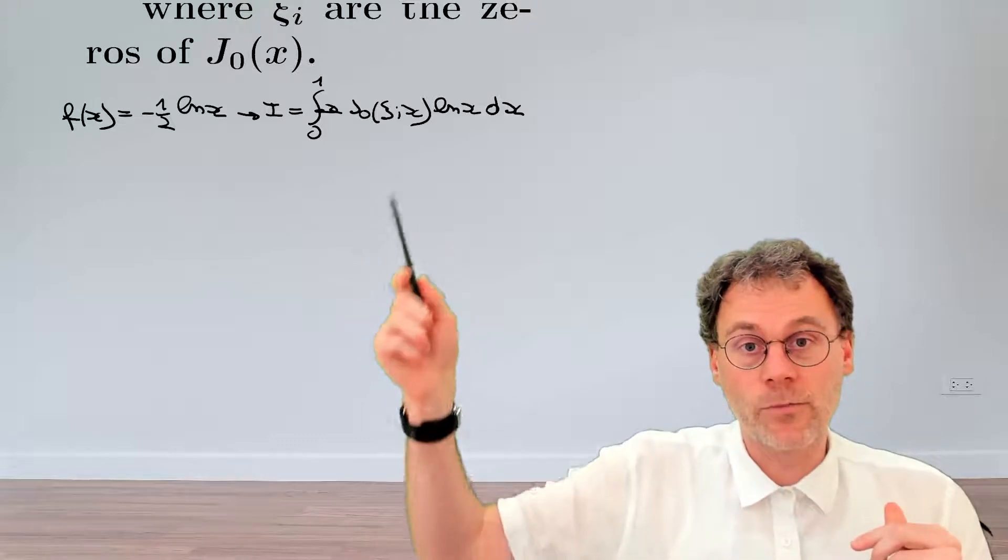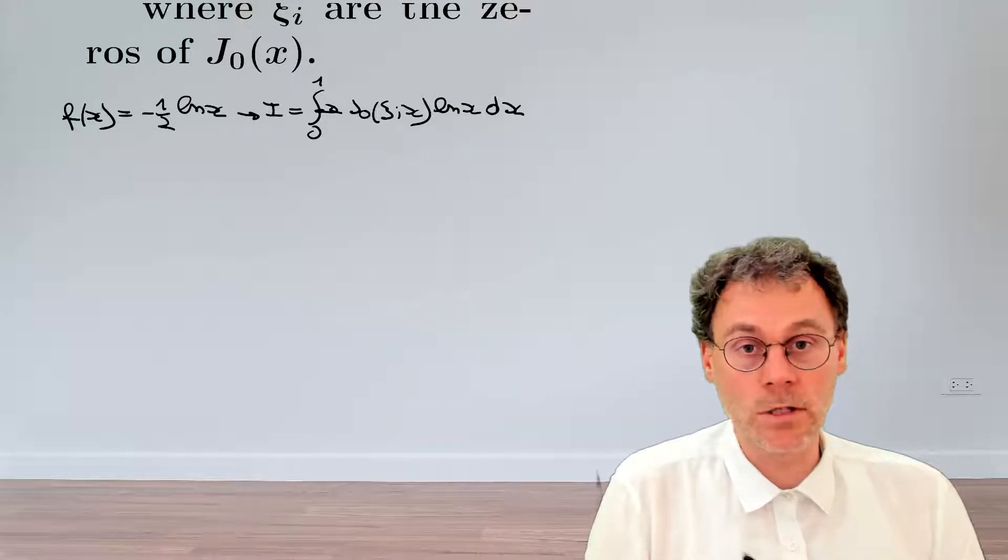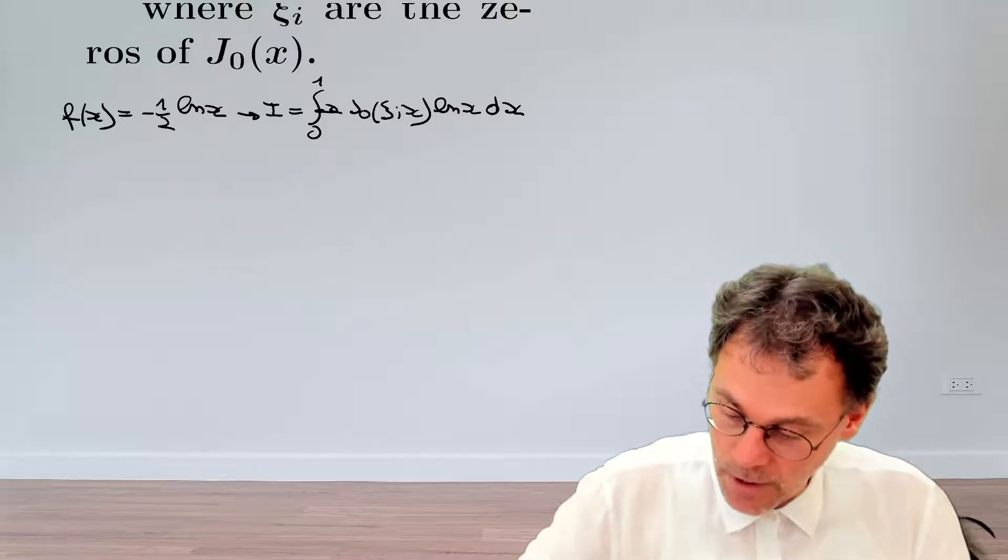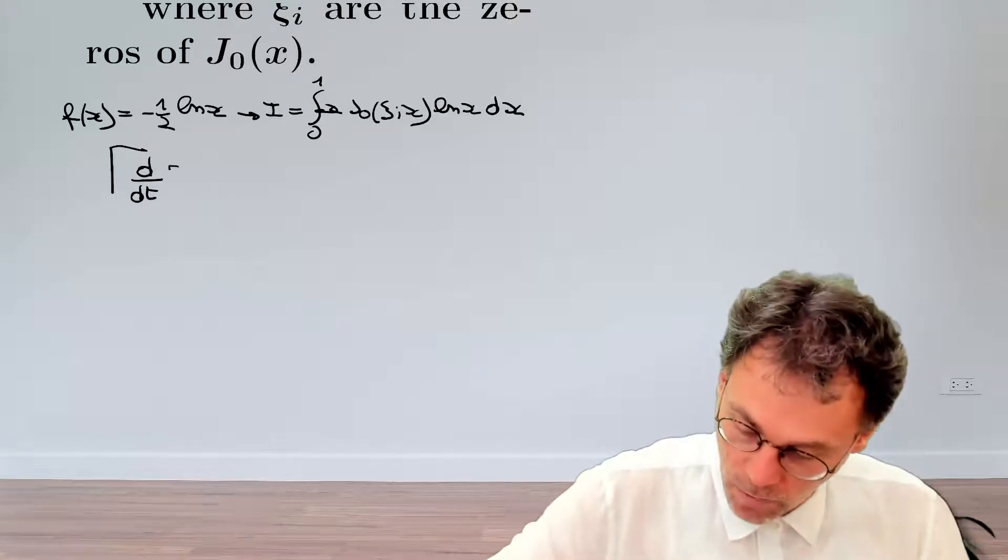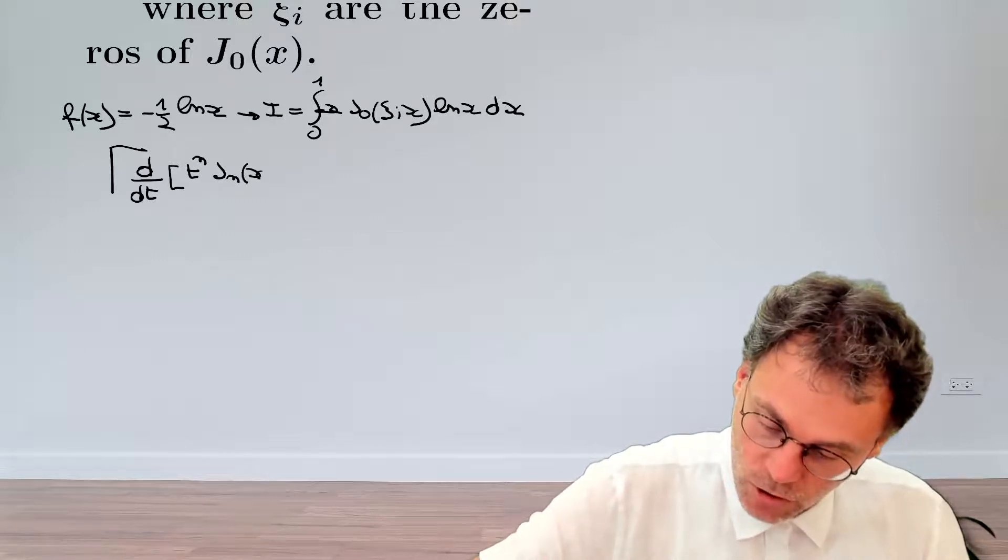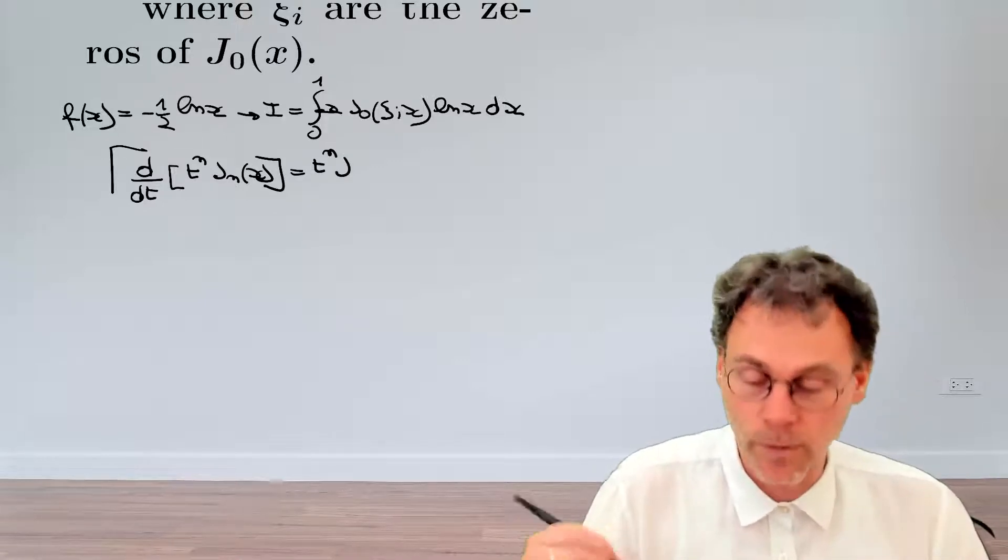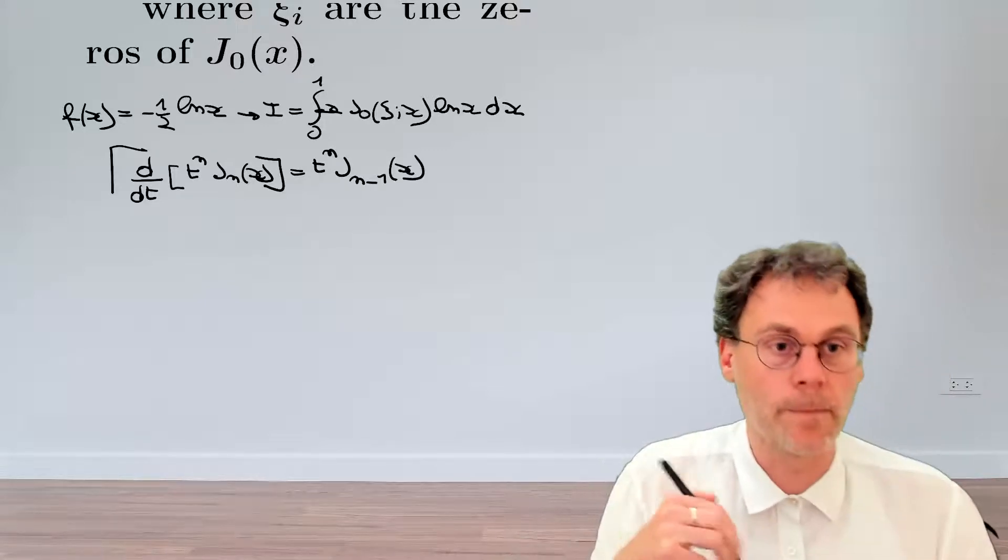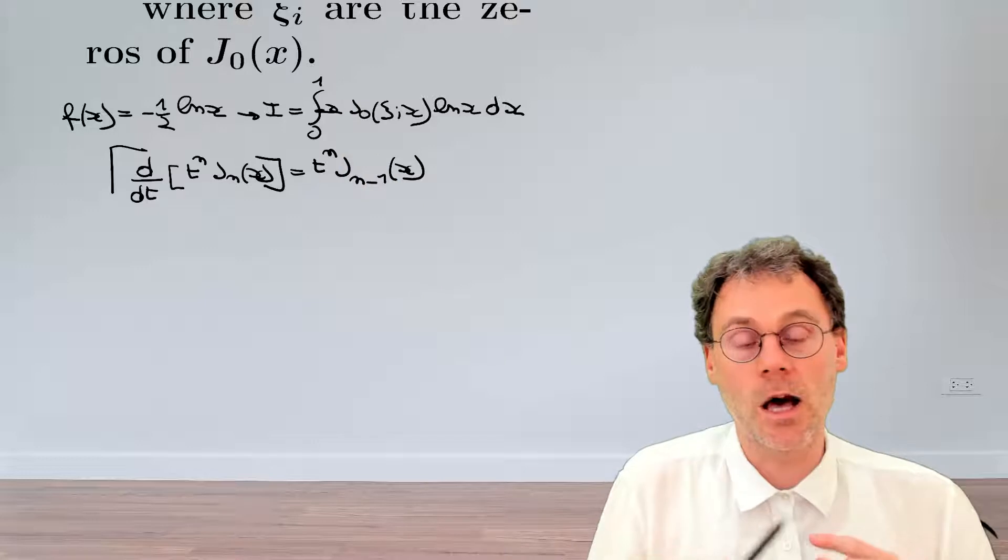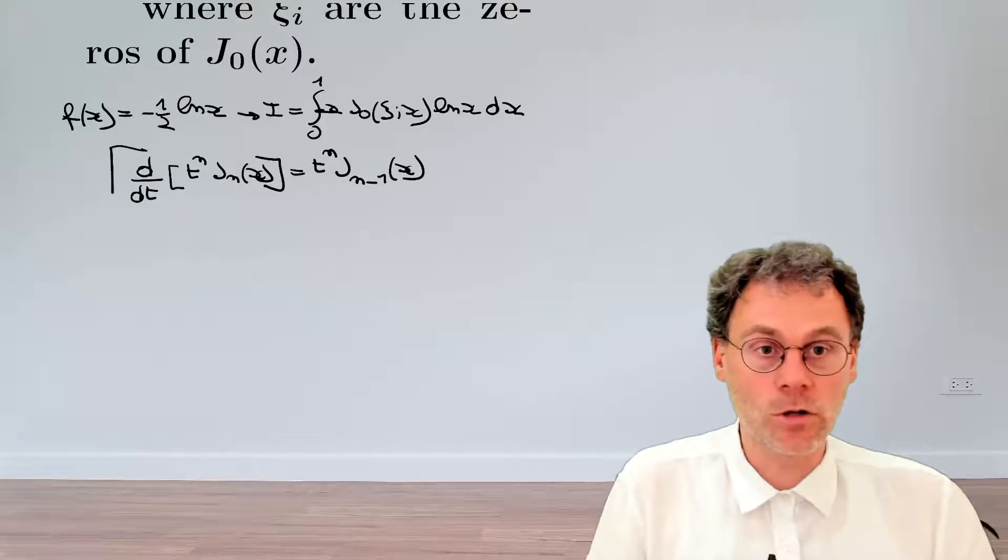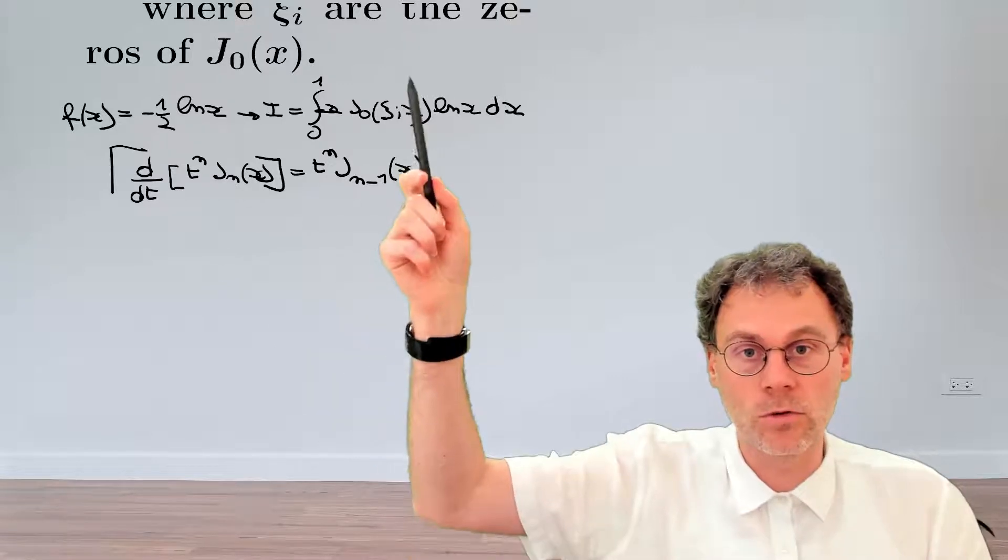So again, we have the situation where we have the products of a Bessel function and a power of x and then some other junk here. So let's try and use the same approach as we already did in a previous exercise, namely making use of these particular formulas here, which involve the derivative d dt of a power of t, so t to the power of n, Bessel function of order n of x. And we know that this is equal to t to the power of n, the Bessel function of an order which is one lower. Now, one thing we could do is we could do a substitution where we replace xi i x with a different variable. Just for variation, we're not going to do that in this case, but just keep it as it is.